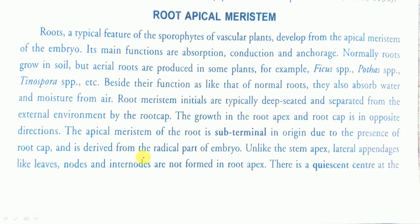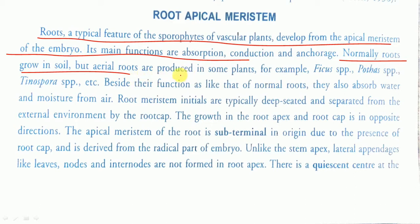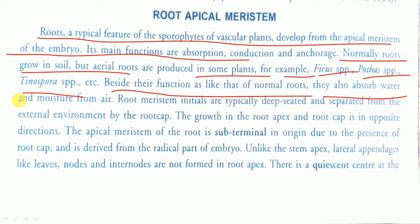The root is a typical feature of all the sporophytes of vascular plants, which develop from the apical meristem of the embryo, and its main function is absorption. Normally the roots grow in soil, but there are some aerial roots also which are produced in some plants, for example in Ficus and Tinospora. Besides their function as that of normal roots, they also absorb water and moisture from air.